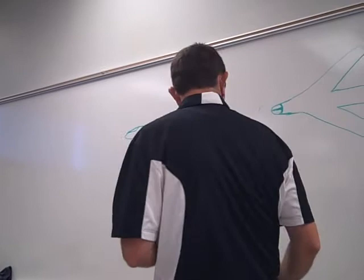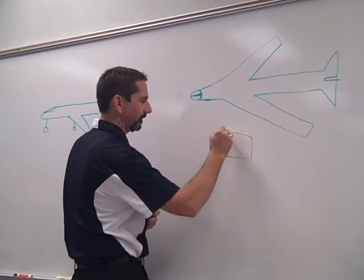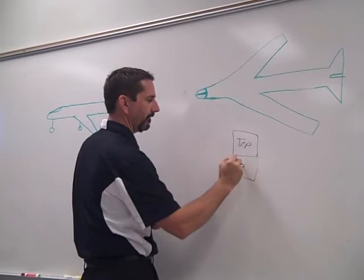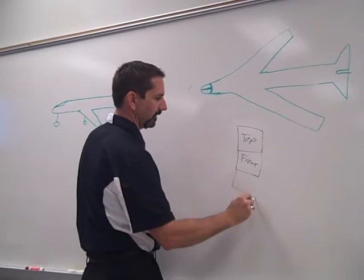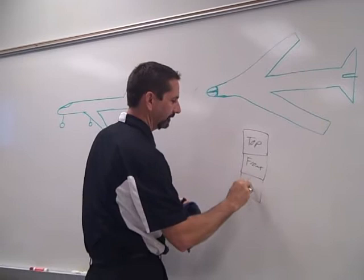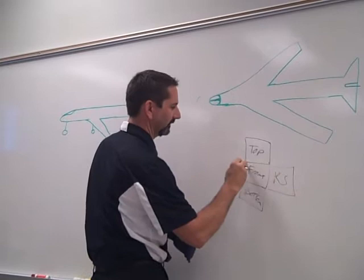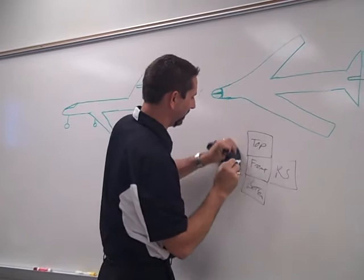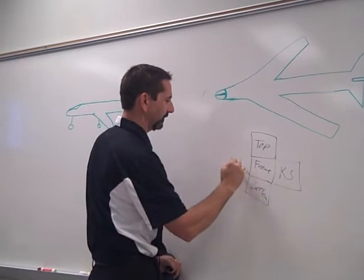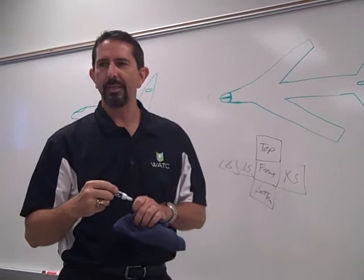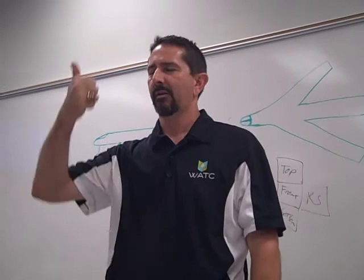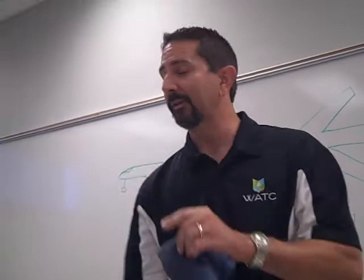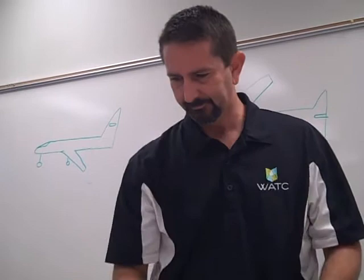We have a total of six views. When you open the box up, you have a top, a front, a bottom, a right side, a left side, and the back. What three views are most commonly used? Top, front, and right side — most commonly used, though not always.